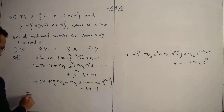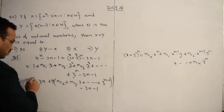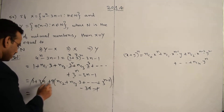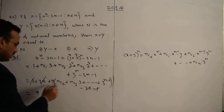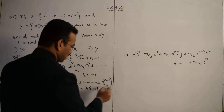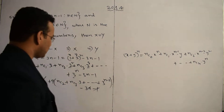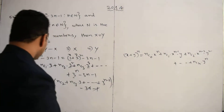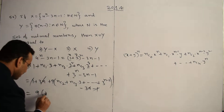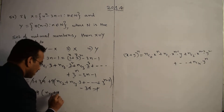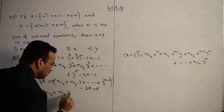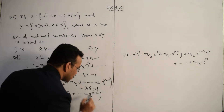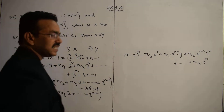In the next step: the 1 and minus 1 cancel, and the n times 3 and minus 3n cancel. What remains is 9 times (nC2 plus nC3 times 3 plus 1 plus 3^(n-2)). This entire expression is the set X — it is clearly a multiple of 9.